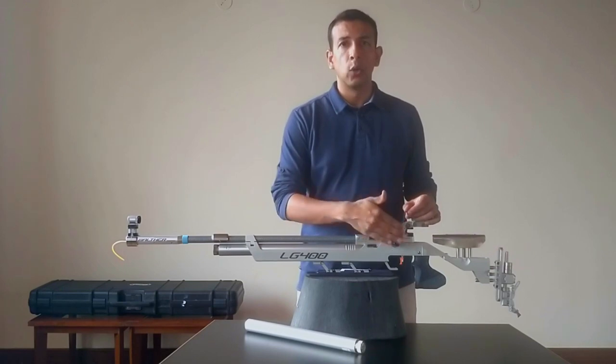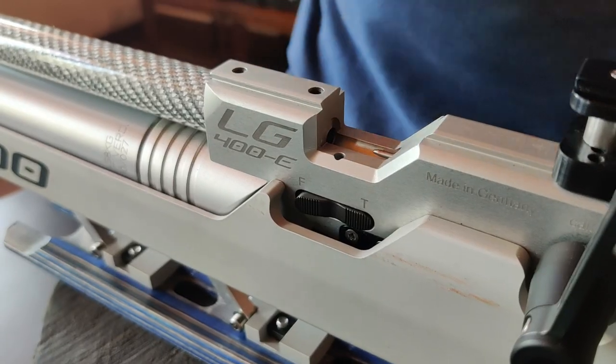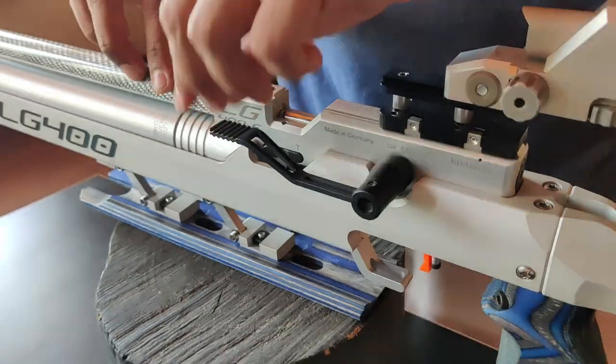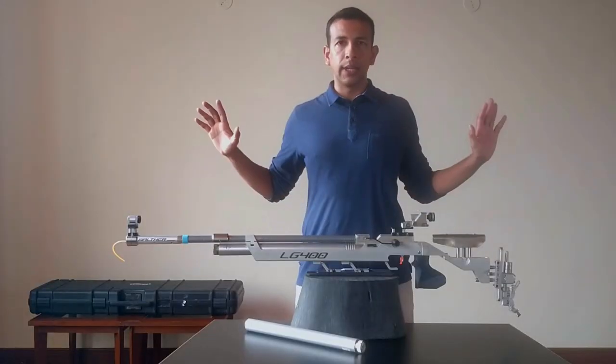This is called the loading lever. We load a pellet in the loading breech. And we just close the loading lever. And now it's ready to shoot.